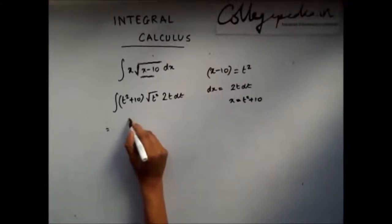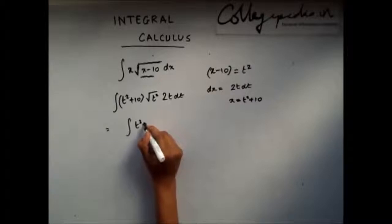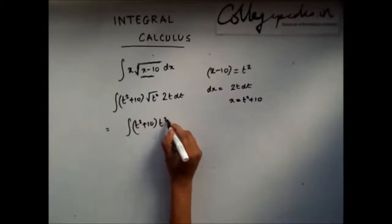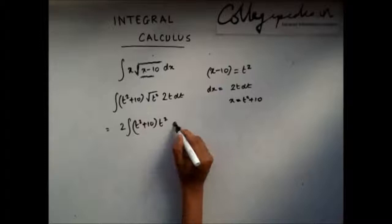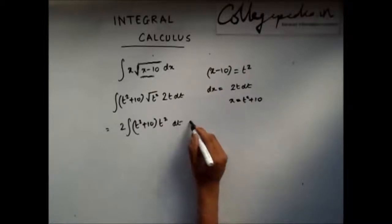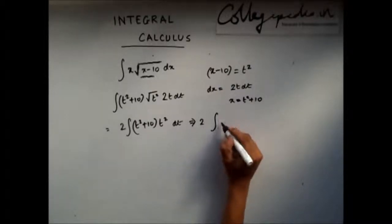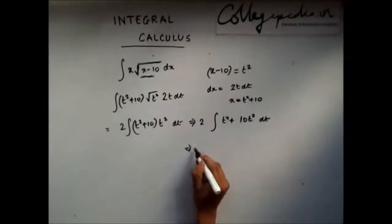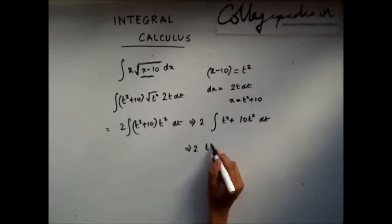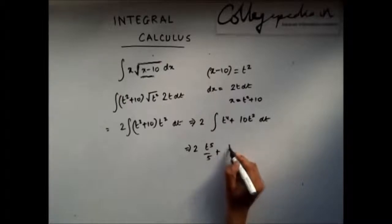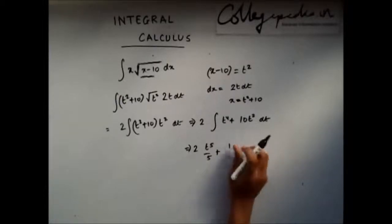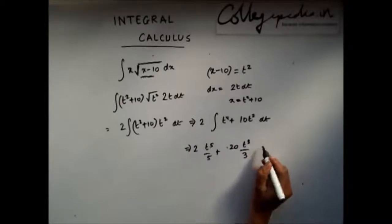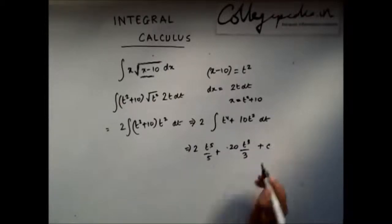This finally turns out as, now this I can write it as 2 multiplied by integration of t to power 4, 10 t square dt. This comes out as here you will get 20 t cube by 3 and you will get a constant of integration c.